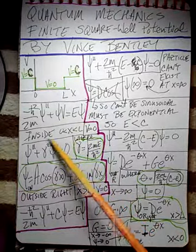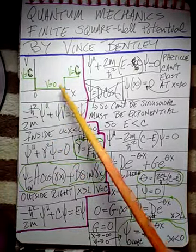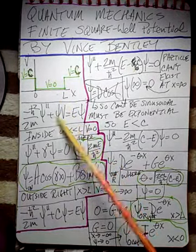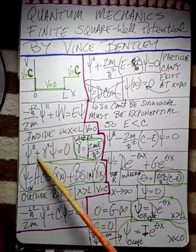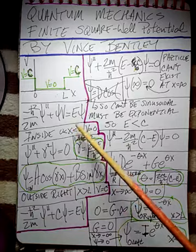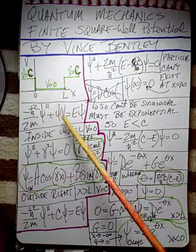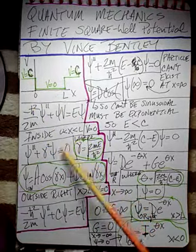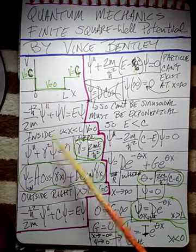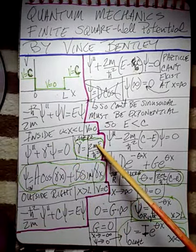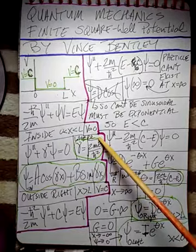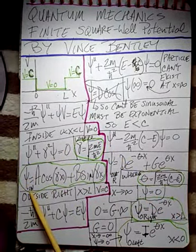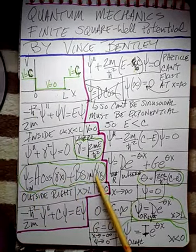Here's our Schrödinger's equation. We're going to solve for inside the well first. The potential is equal to 0, and if potential is equal to 0, this term is gone. I've changed the E and all the other terms into gamma squared, where gamma equals the square root of 2mE over h-bar squared. If you solve this, you'll get psi inside equals A cosine(γx) plus B sine(γx).